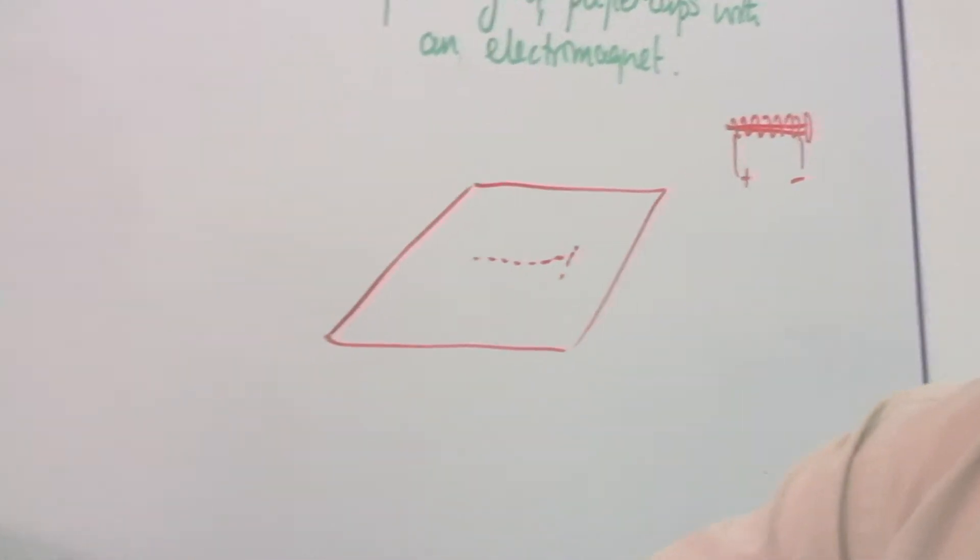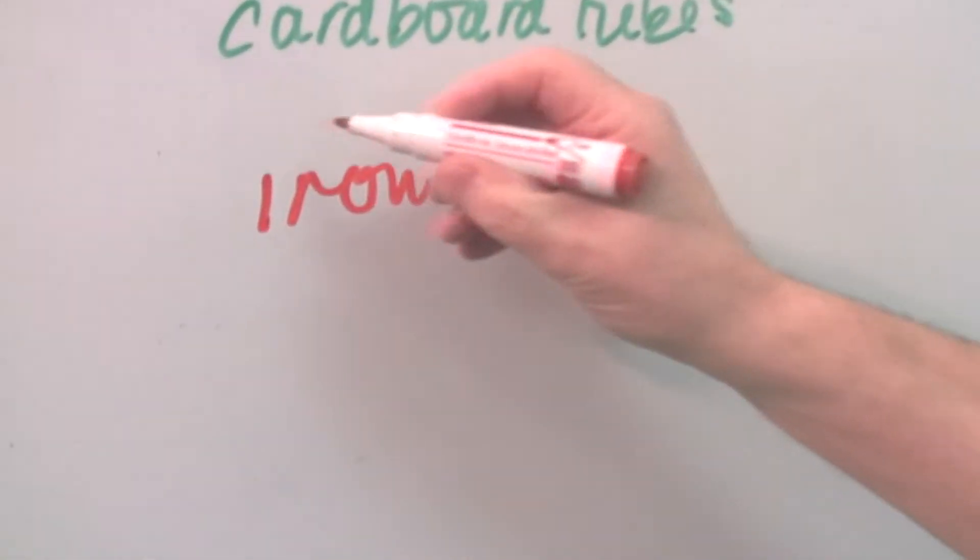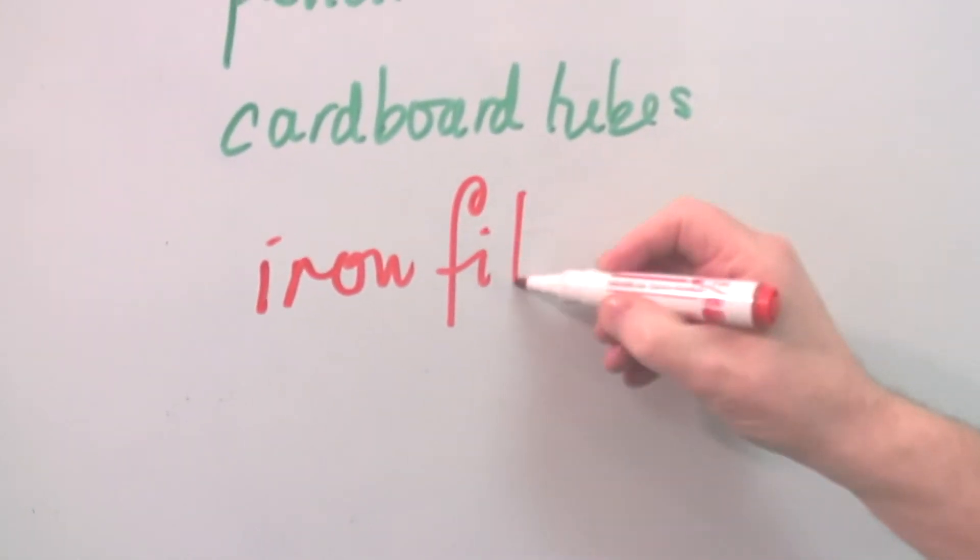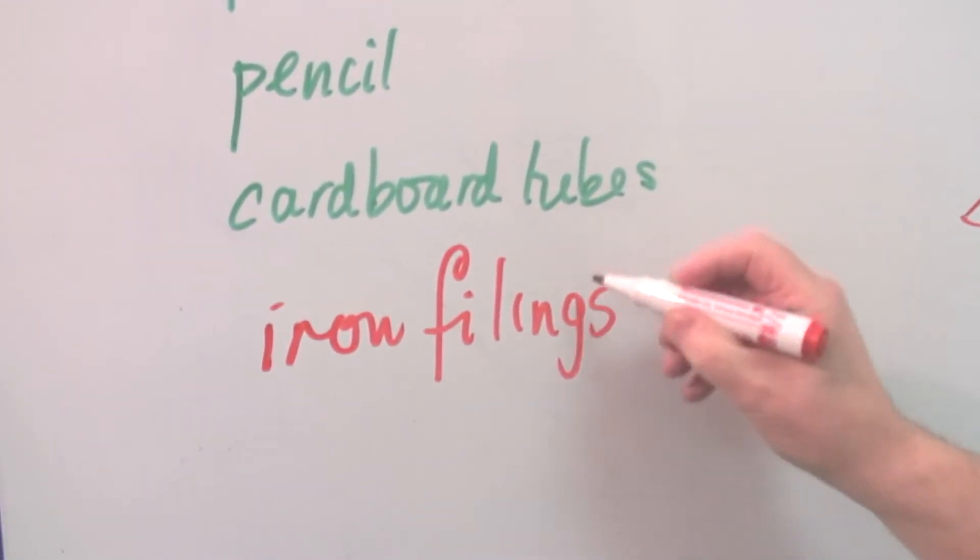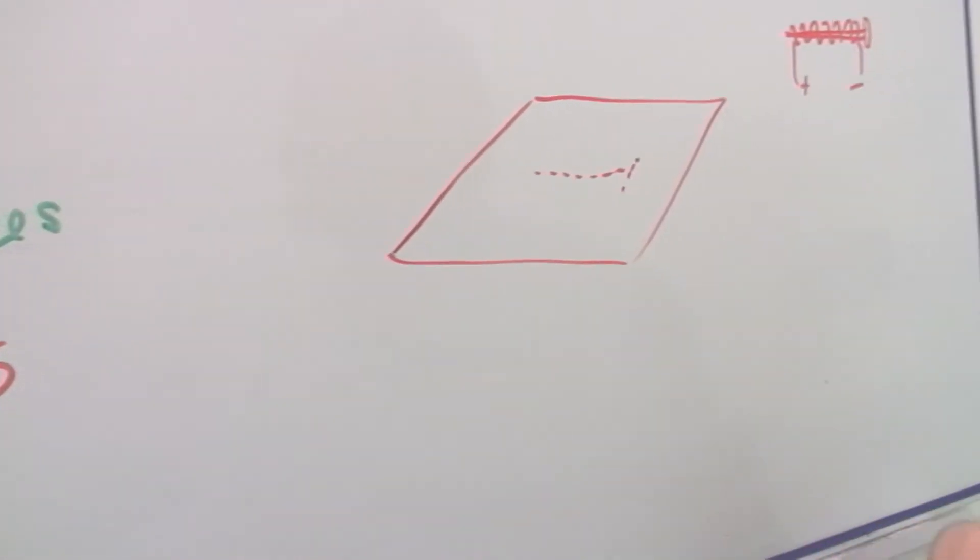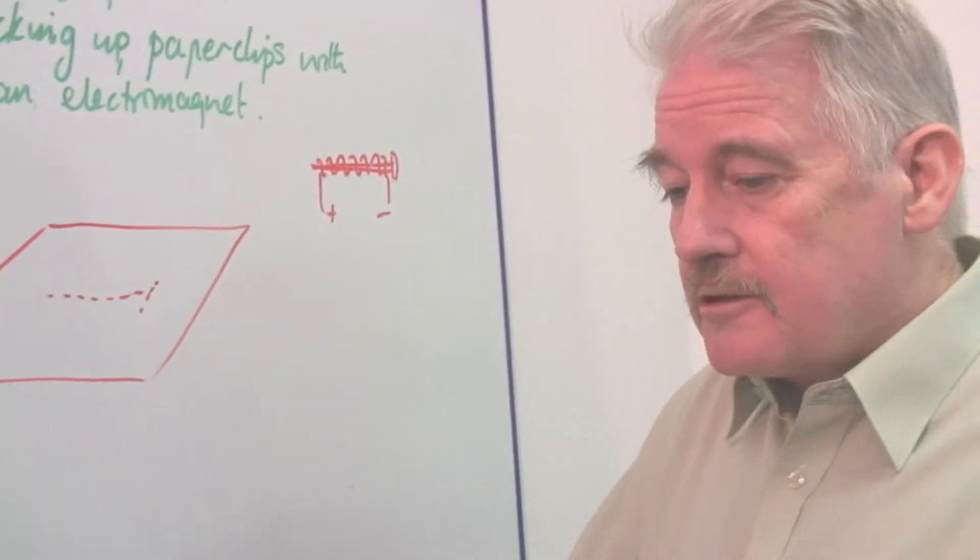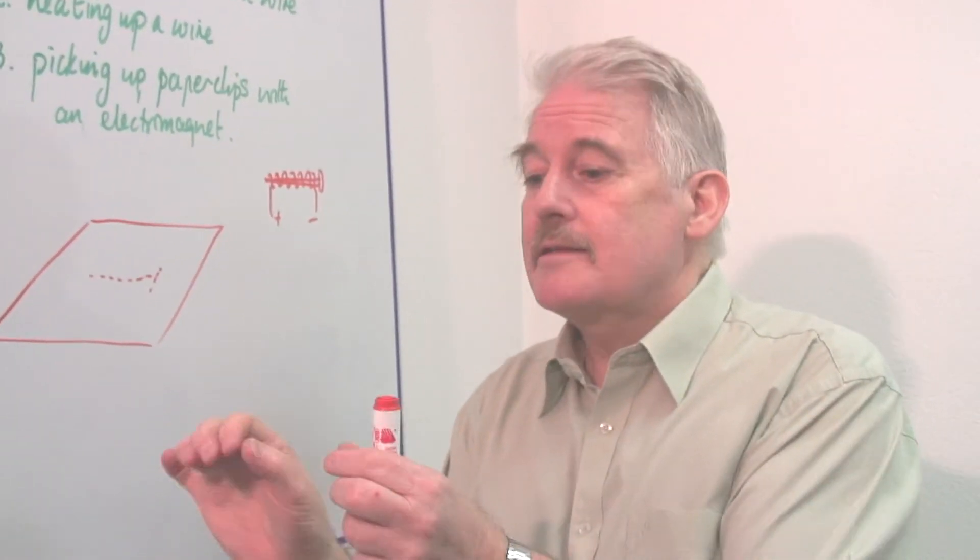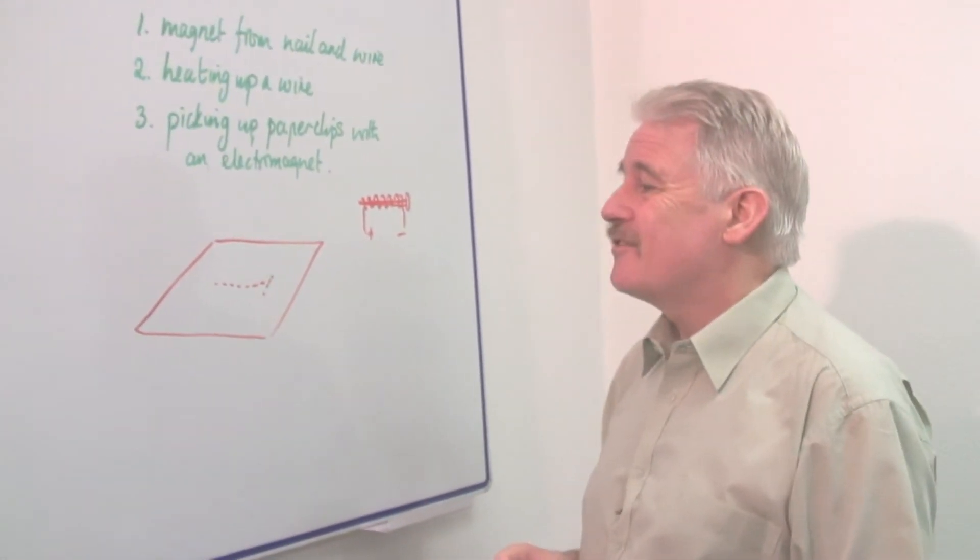Now what you need for this are iron filings. Now iron filings are what you get when you get a rasp for rasping metal and you rasp it and you rasp the iron and you get these little bits of iron. Those are iron filings.